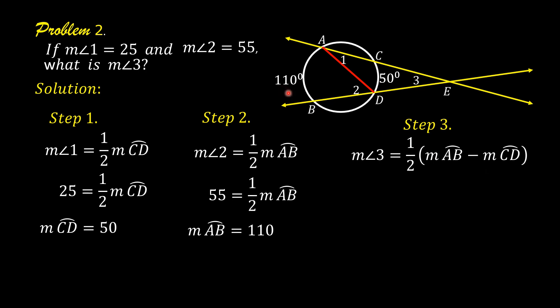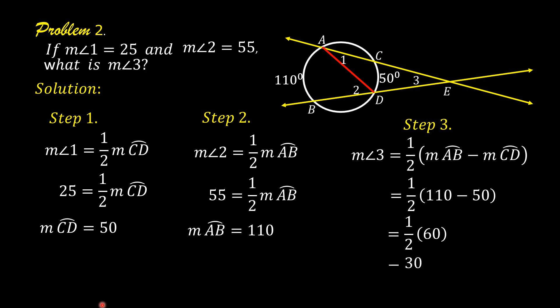Substitute 110 for measure of arc AB and substitute 50 for measure of arc CD. This is now equal to one-half times the quantity 110 minus 50, which equals one-half of 60. And one-half of 60 is equal to 30. Therefore, the measure of angle 3 is equal to 30 degrees.